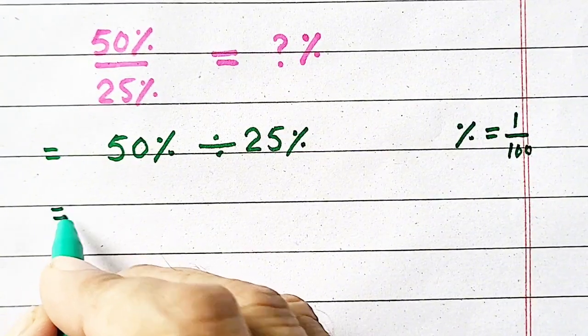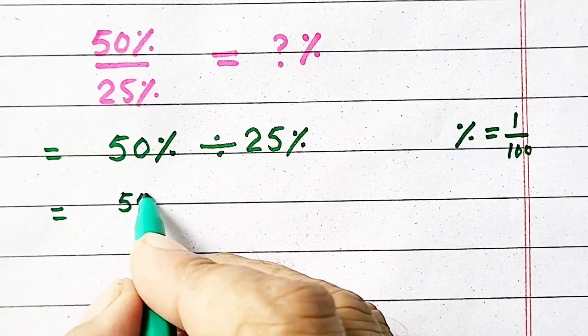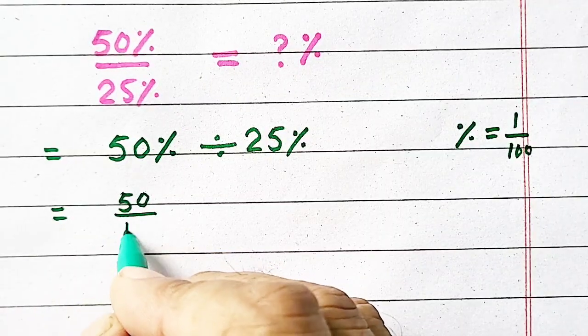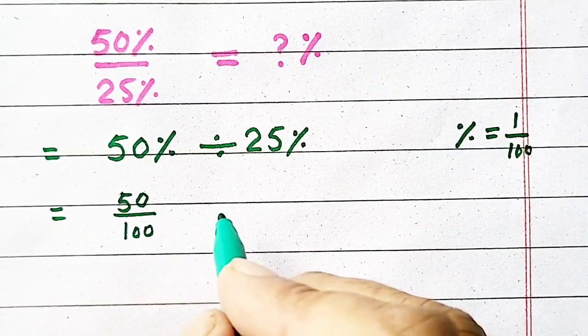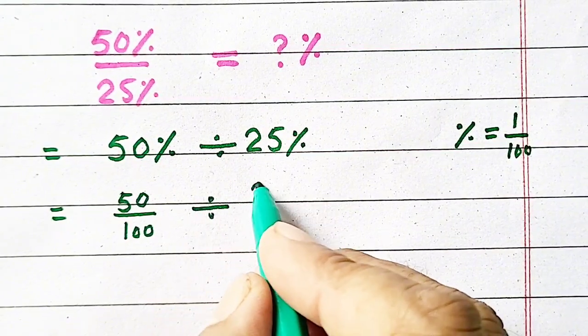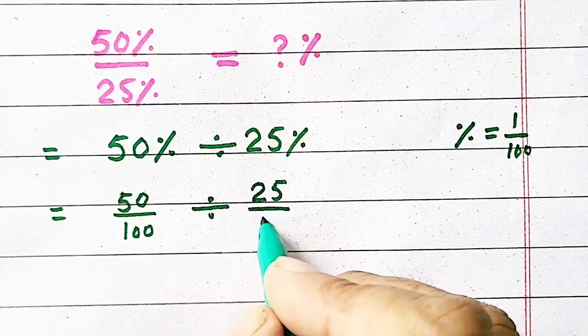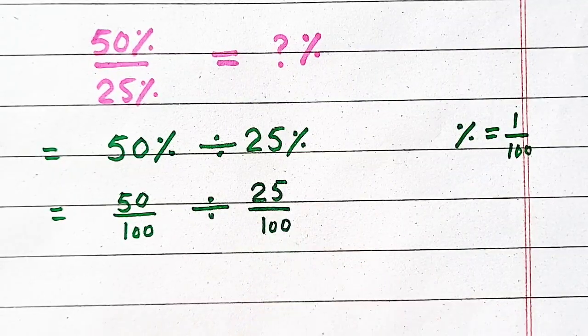So, 50% means 50 divided by 100, and divided by 25% means 25 divided by 100.